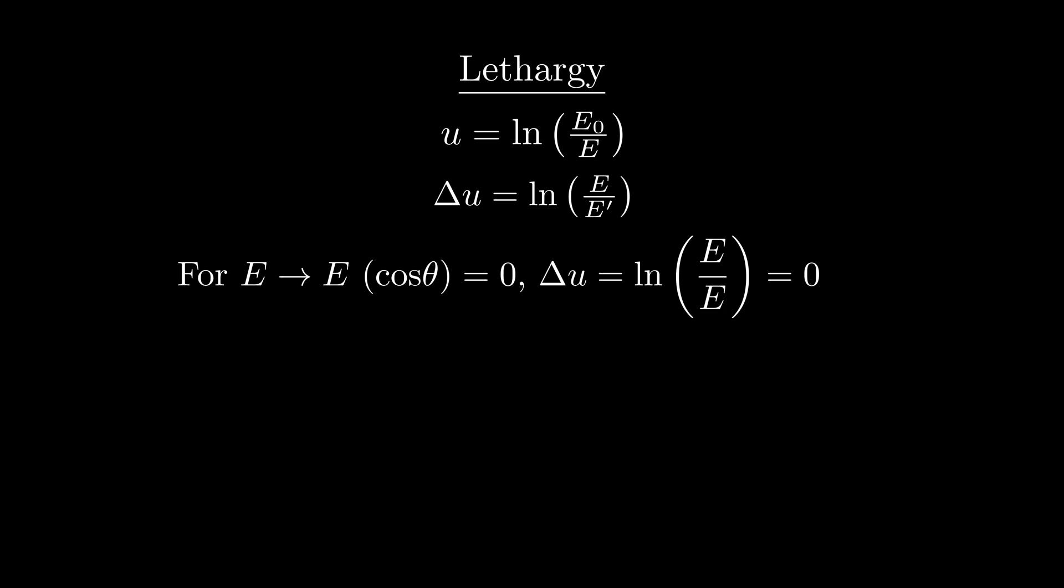And our maximum change in energy happens when we backscatter and go from E to alpha E. Now in terms of a change in lethargy, this is when lethargy increases by the natural log of 1 over alpha. So our energy dependence has been removed. It doesn't matter if our neutron has 10 MeV of energy or a fraction of an eV, its maximum change in lethargy for a scatter is the same.